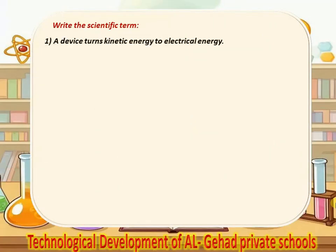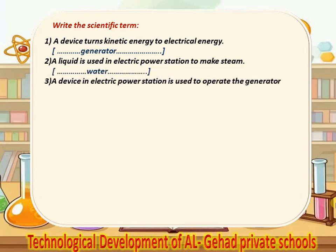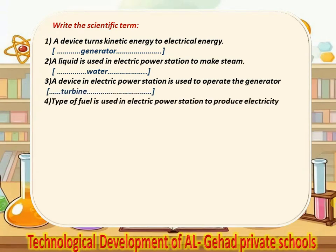Write the scientific term. Number 1, a device that turns kinetic energy to electrical energy — Generator. Number 2, a liquid used in an electric power station to make steam — Water. Number 3, a device in an electric power station used to operate the generator — Turbine. Number 4, a type of fuel used in an electric power station to produce electricity — Fossil fuel.